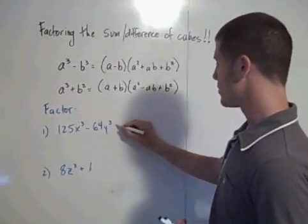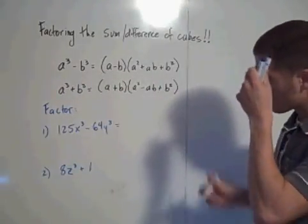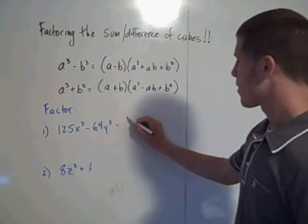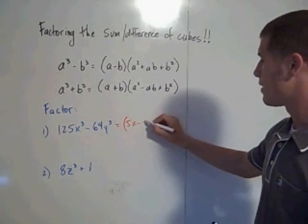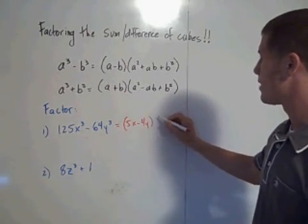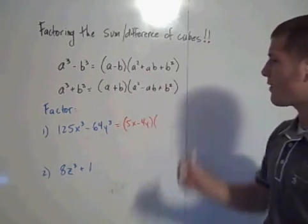So this factors to—refer to the first formula here—it's going to be 5x minus 4y times your a value squared.